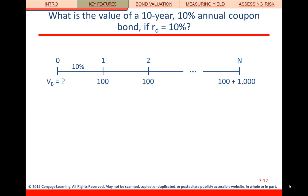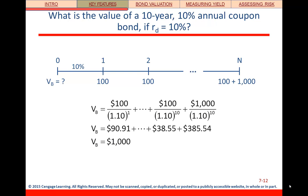Setting up bond valuation, let's look at a ten-year, ten percent annual coupon bond when the yield to maturity — the cost of debt — is also ten percent. At that point, the coupon rate equals the yield, and the face value equals the price, meaning it's selling at par. The calculations shown here prove that this is true.